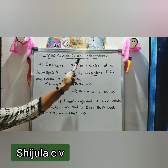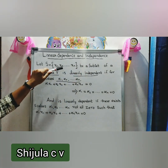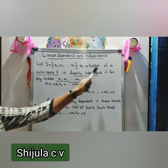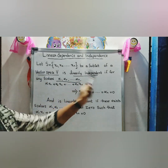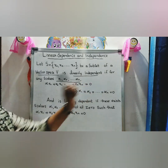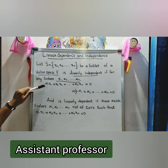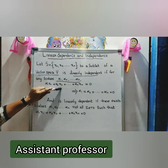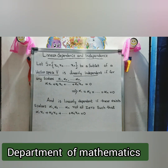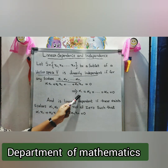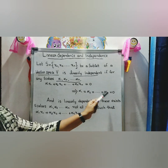Linear Dependence and Independence. Let S = {x₁, x₂, ..., xₙ} be a subset of a vector space V. S is linearly independent if for any scalars α₁, α₂, ..., αₙ, the equation α₁x₁ + α₂x₂ + ... + αₙxₙ = 0 implies that α₁ = α₂ = ... = αₙ = 0.